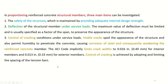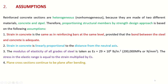Now, what are the assumptions in developing the design equations for understanding the behavior of reinforced concrete in flexure? Reinforced concrete sections are heterogeneous — non-homogeneous — because they are made of two different materials: concrete and steel. Therefore, proportioning structural members by the strength design approach is based on the following assumptions.